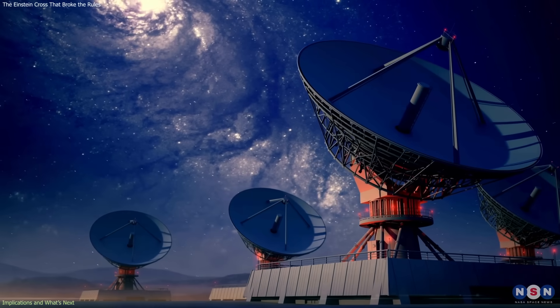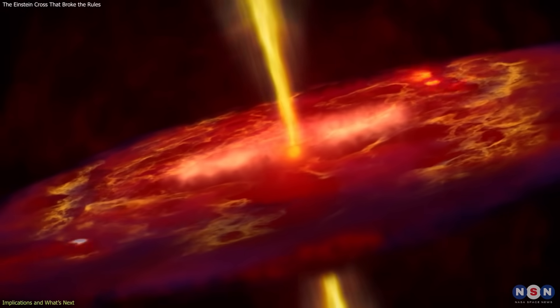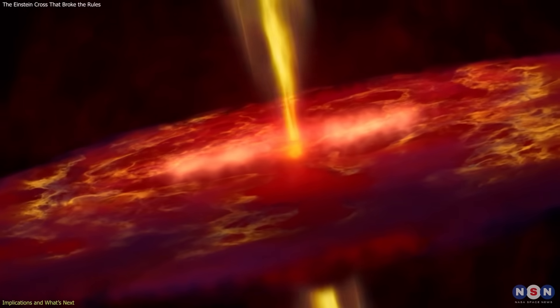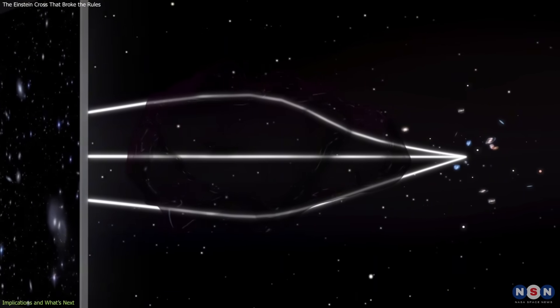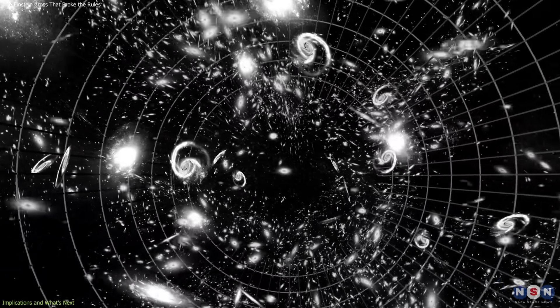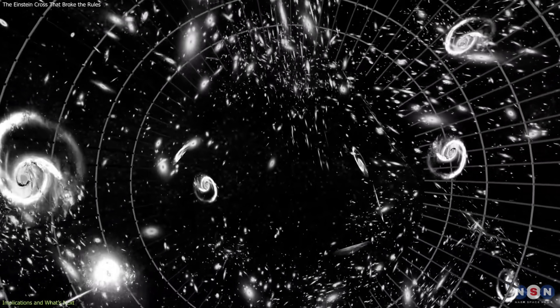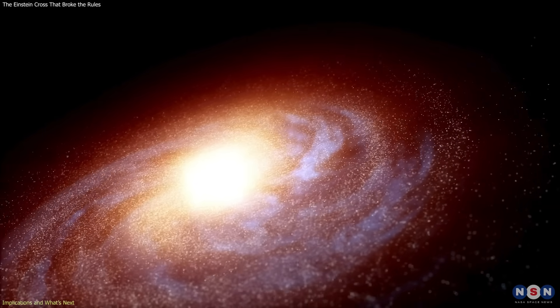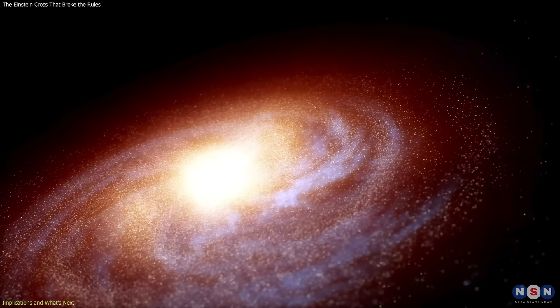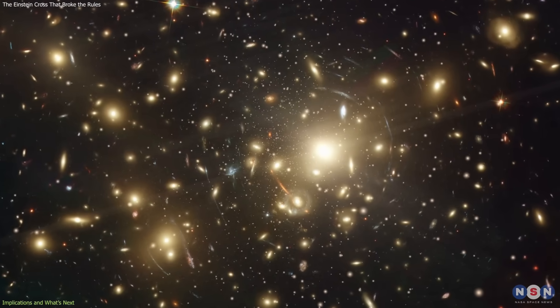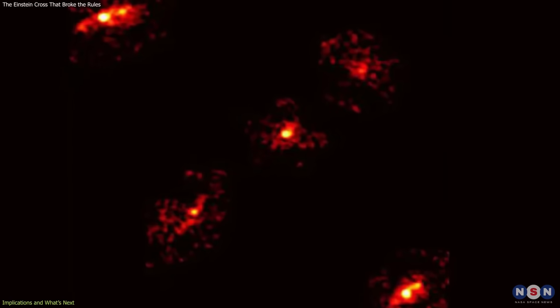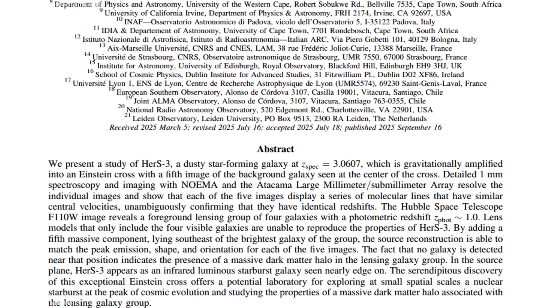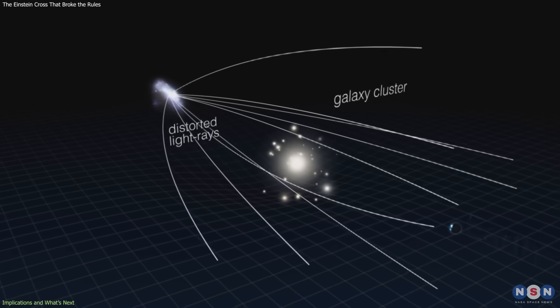they expect that future high-resolution observations will reveal features such as outflowing gas from HER-S III magnified by the lens. If those predictions are confirmed, it will validate the halo model. If not, it could point to new complexities in either its distribution or the behavior of the background galaxy. This process illustrates how astronomy advances: an unexpected result challenges assumptions, and in trying to explain it, researchers refine their models of how the universe works.